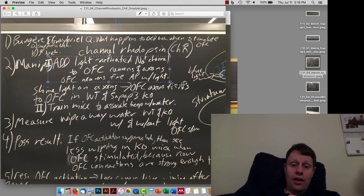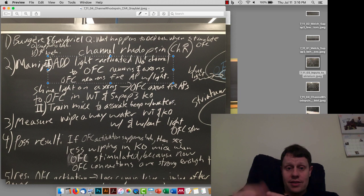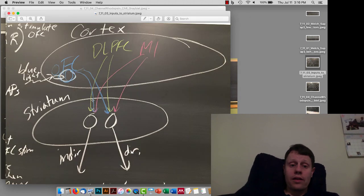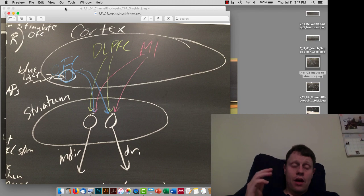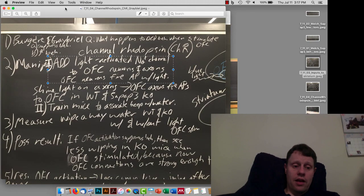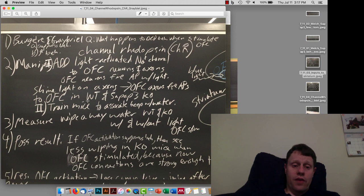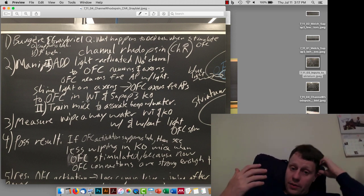When we shine light on those axons, all of the axons see the light, but only the ones from the orbital frontal cortex have this modification that makes them respond to the light and become active and start firing action potentials. So, that's sort of their long experimental setup.